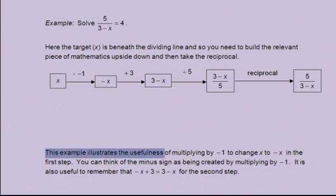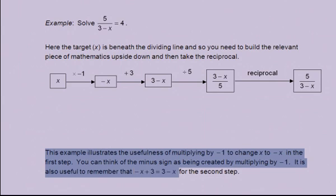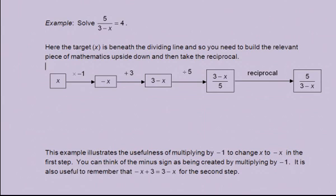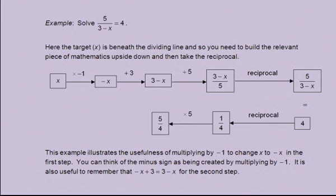This example illustrates the usefulness of multiplying by minus 1 to change x to minus x in the first step. You can think of the minus sign as being created by multiplying by minus 1. It is also useful to remember that -x + 3 = 3 - x for the second step. Returning to the flow chart, 5/(3 - x) is equal to 4. First you take the reciprocal, which is equal to a quarter. Next multiply by 5. A quarter multiplied by 5 is 5/4. Next subtract 3. 5/4 subtract 3 equals -7/4. Finally multiply by minus 1, to discover that x is equal to 7/4.